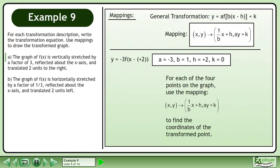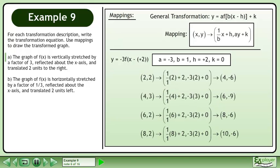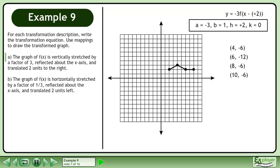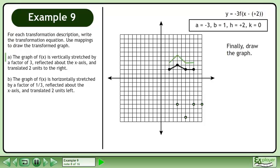For each of the four points on the graph, use the mapping shown to find the coordinates of the transformed point. The mapping calculations for the four points are shown. Plot the transformed points. Finally, draw the graph.